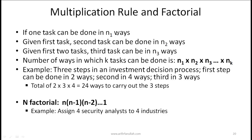Now we'll discuss the multiplication rule and factorials. If one task can be done in n1 ways, the second in n2 ways, and the third in n3 ways, the total number of ways to complete k tasks is n1 × n2 × n3 × ... × nk. For example, if an investment decision has three steps done in 2, 4, and 3 ways respectively, the total is 2 × 3 × 4 = 24.